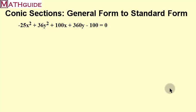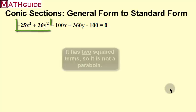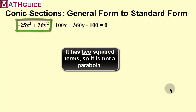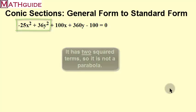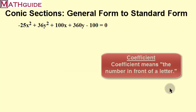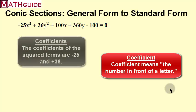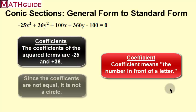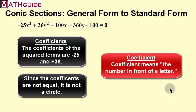I'd like to identify what this conic section is. If it only had one squared term, it would be a parabola. So it's not a parabola. If it was a circle, the coefficients of the squared terms would be equal. Since they're not equal in value, it's not a circle.